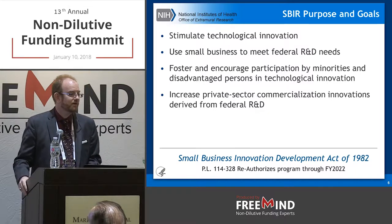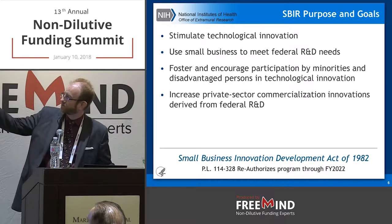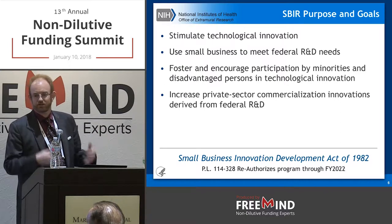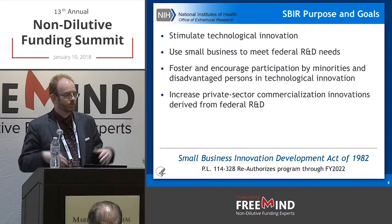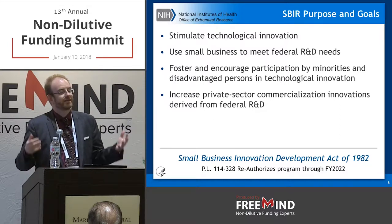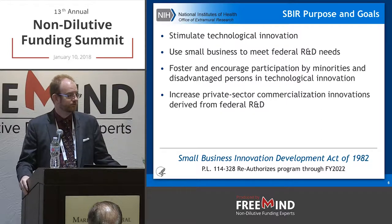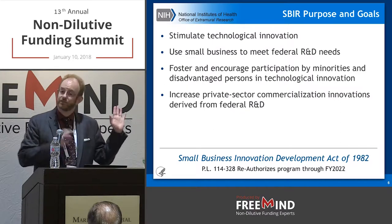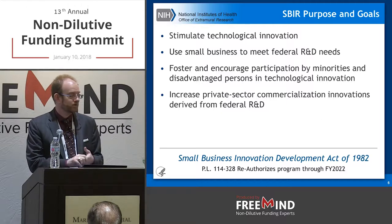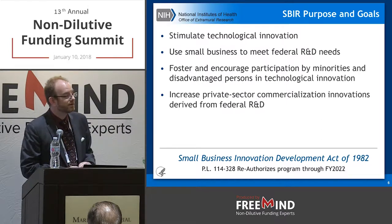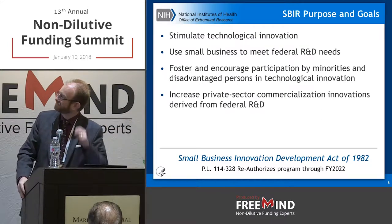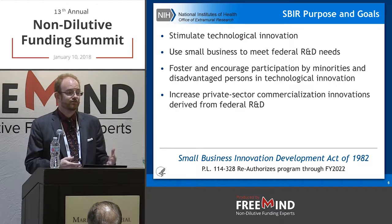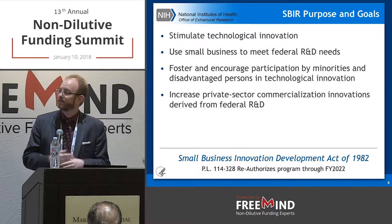SBIR started 35 years ago — Act of Congress in 1982. The four congressional goals are all about using the private sector to commercialize technology, which at the time was a very unusual thing for the government to do. Why should the government give research grants and contracts to for-profit small businesses where the government doesn't get royalties, ownership, or a kickback in return? It's non-dilutive. We do get tax revenue, and for NIH, we want to improve public health and really change people's lives.